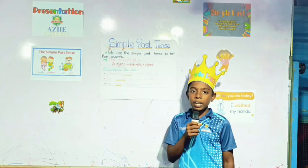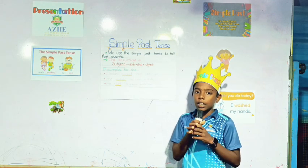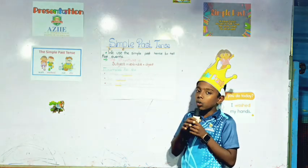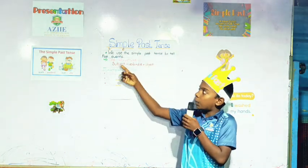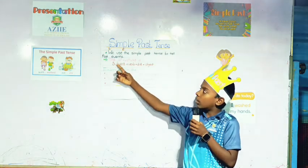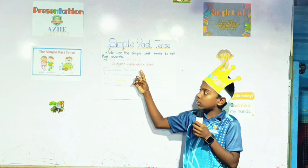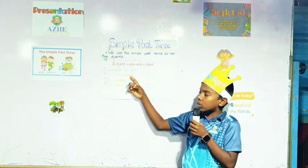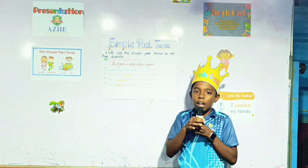Good evening everybody. I am Larian. I am going to explain about simple past tense. We use simple past tense to tell past events. The structure is subject plus verb plus get past plus object. Example: Dadan taught me last night.